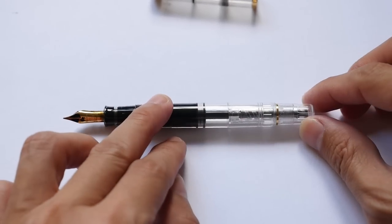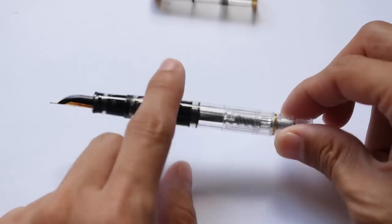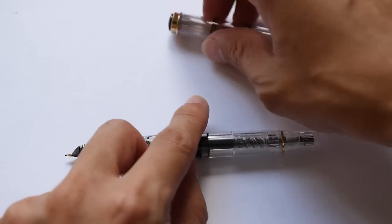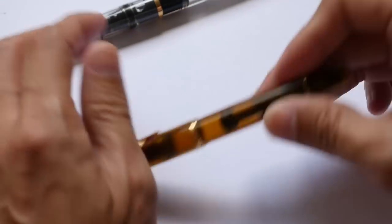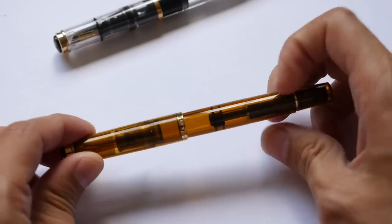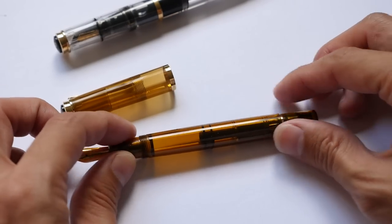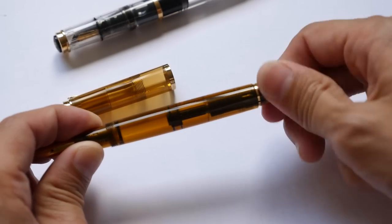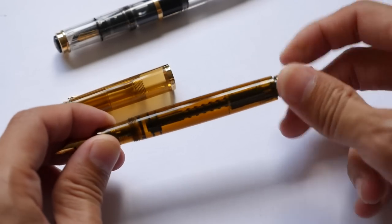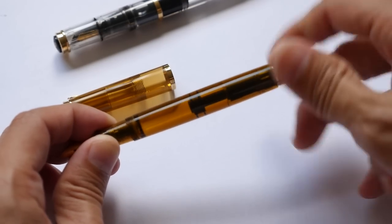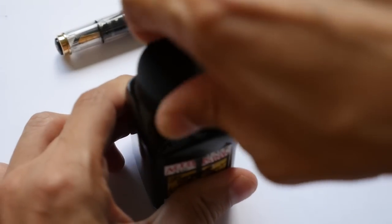This pen uses a piston filling mechanism, so you can twist it using this knob here. I have ink inside, but let me show you another pen that I have without ink. This is another different version of M200 with the cognac body. If you twist the piston, you go all the way down and you can suck the ink up.